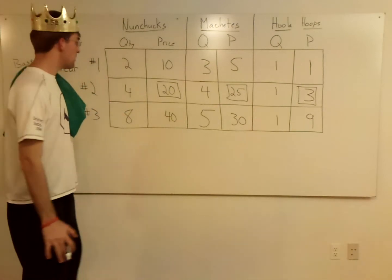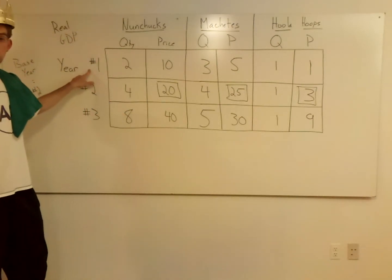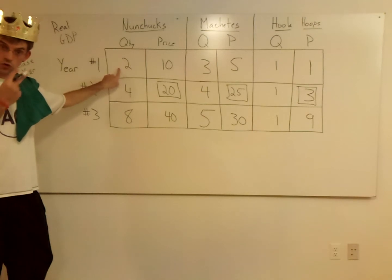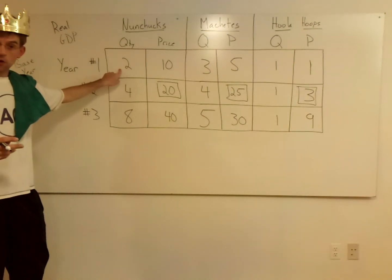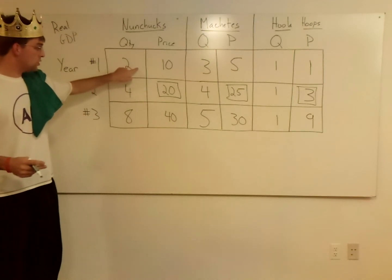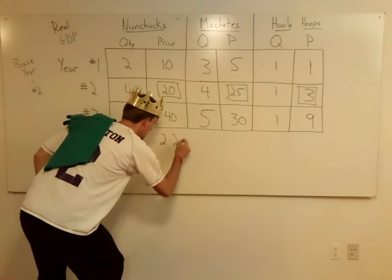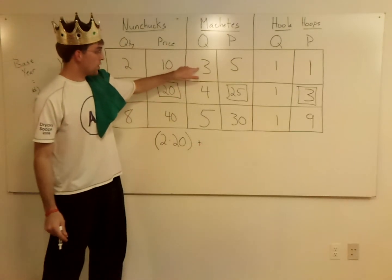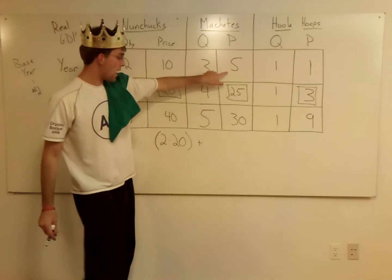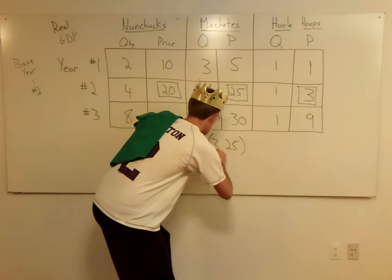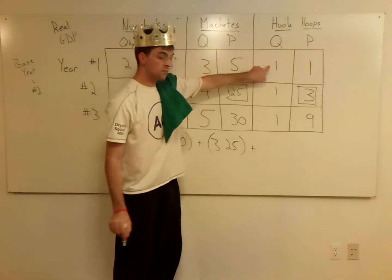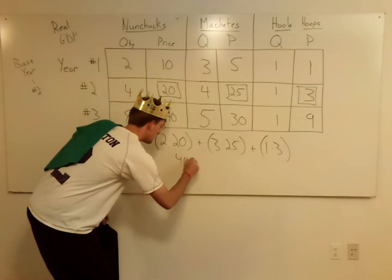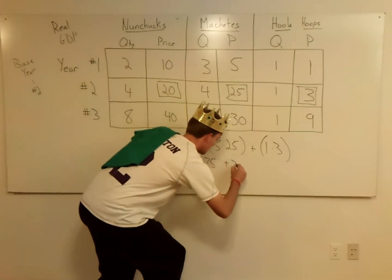Let's calculate the real GDP in year one. In year one, how many nunchucks? Two. The price I'm going to multiply by is 20 — not 10, do not do that — so two times 20. Then I add machetes: in year one I made three machetes, multiply by 25, not five. So three times 25. Finally, hula hoops: I made one, at three dollars — one times three.